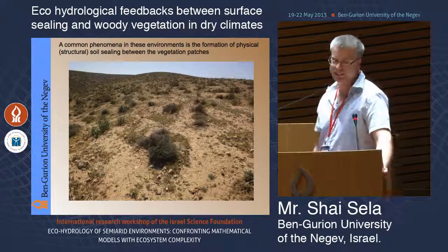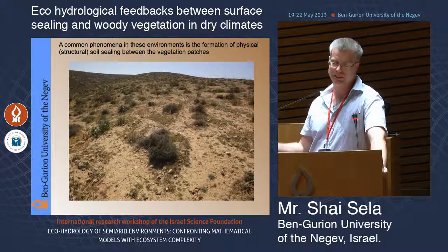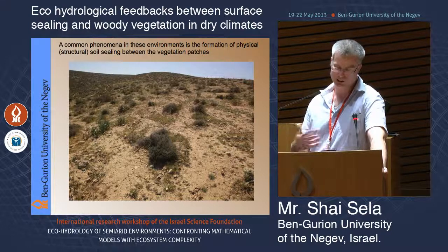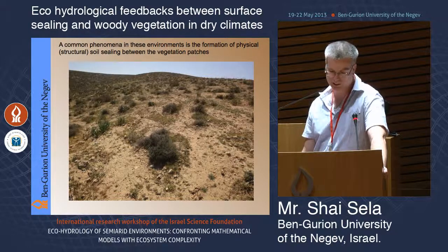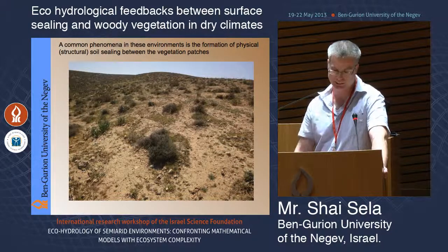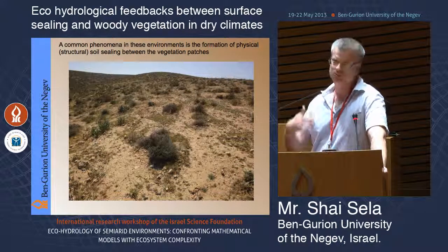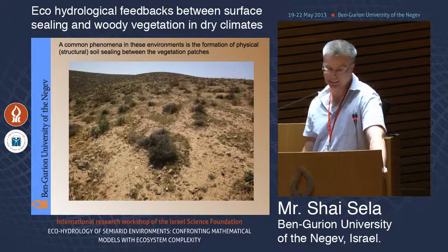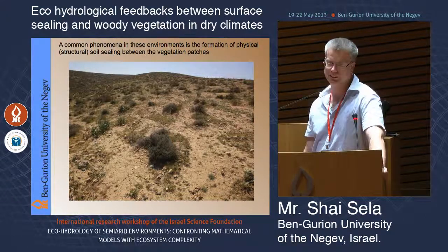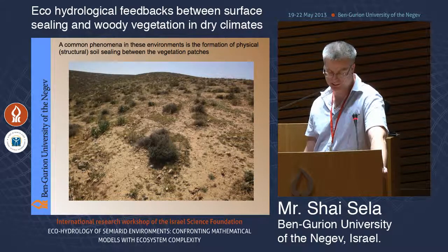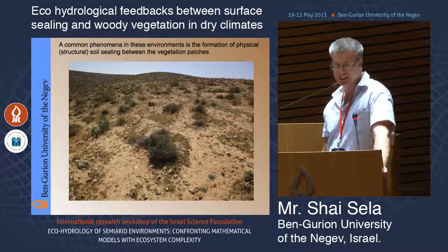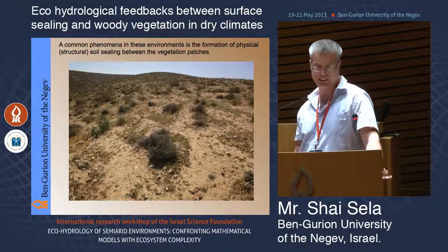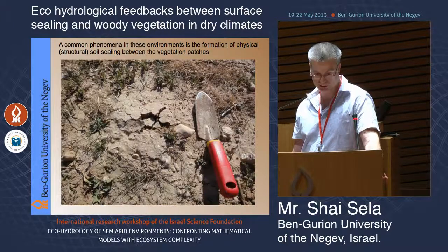When you have a patch, it is surrounded by bare soil. This bare soil gets crusted and acts as a source for water — runoff is generated and infiltrates into the patch. We have all kinds of crusting in the field. As Ehud suggested, some biological crusting, and also physical crusting. In this talk today, I will only address the physical crusting of the soil.